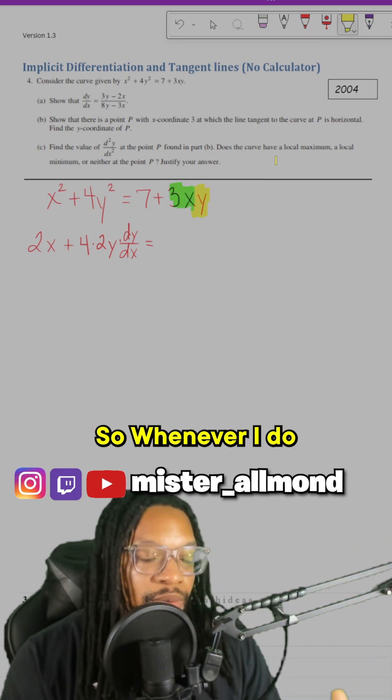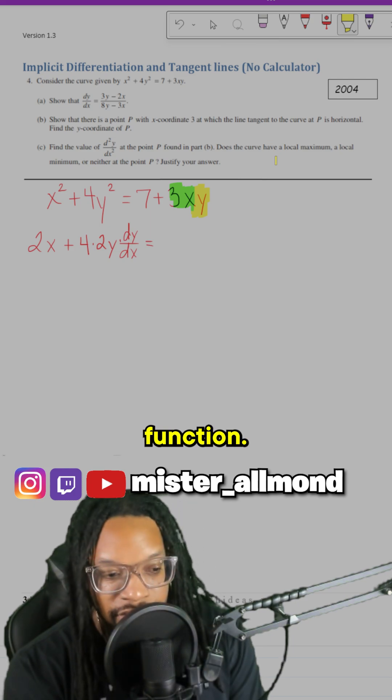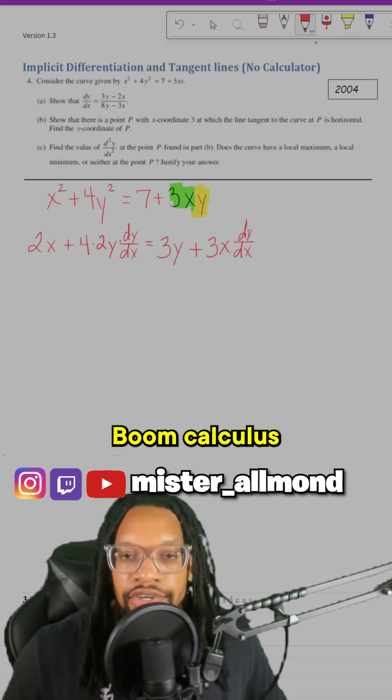So whenever I do product rule, I always do the derivative of the first function times the second function, and then plus the other way around. Boom. Calculus is done.